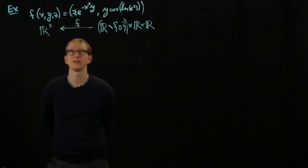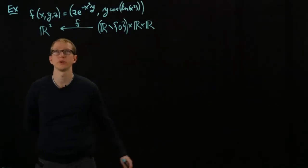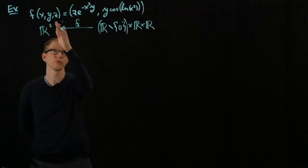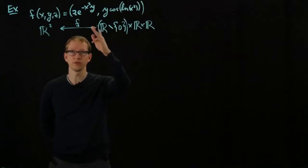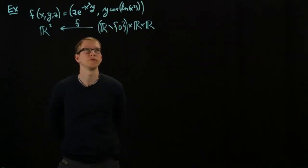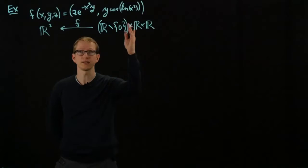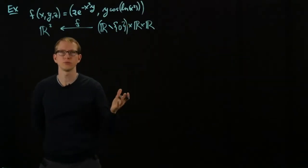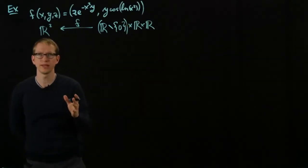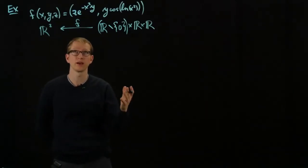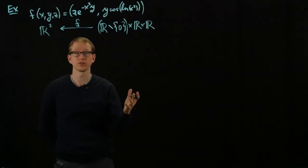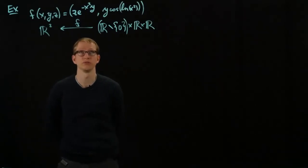To calculate the differential of this function at an arbitrary point x, y, z, all we have to do is calculate what it is on each of the components. We can focus on the second component, and we'll do a blend of applying the differential without using partial derivatives, and then also applying the differential by actually using partial derivatives.